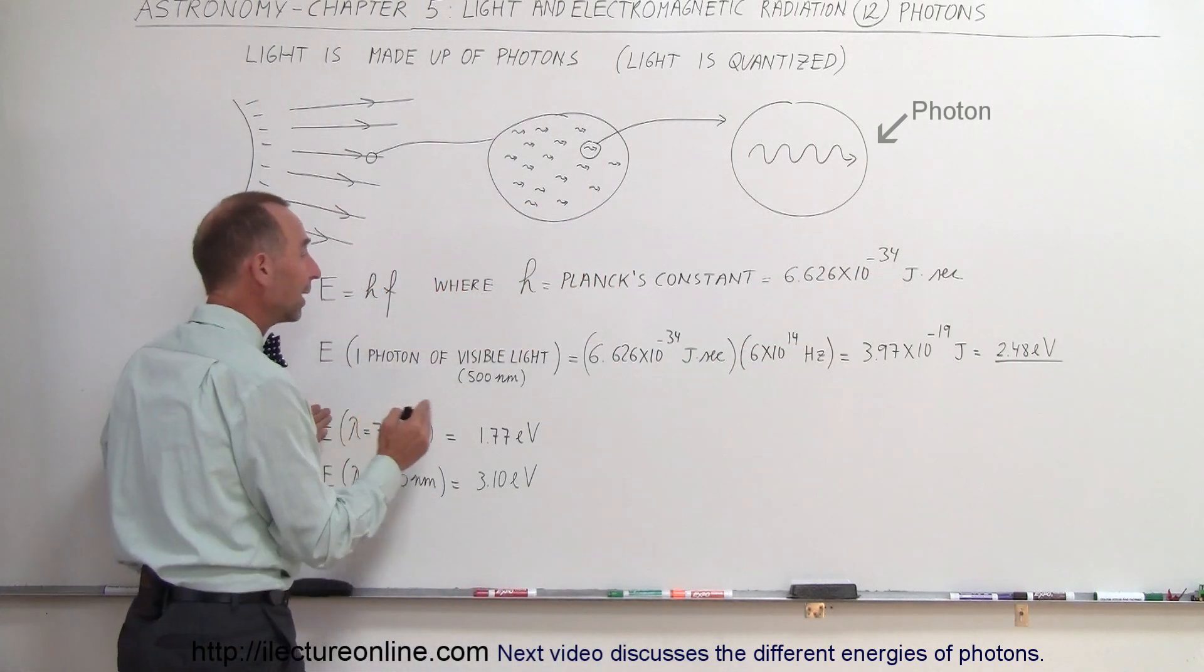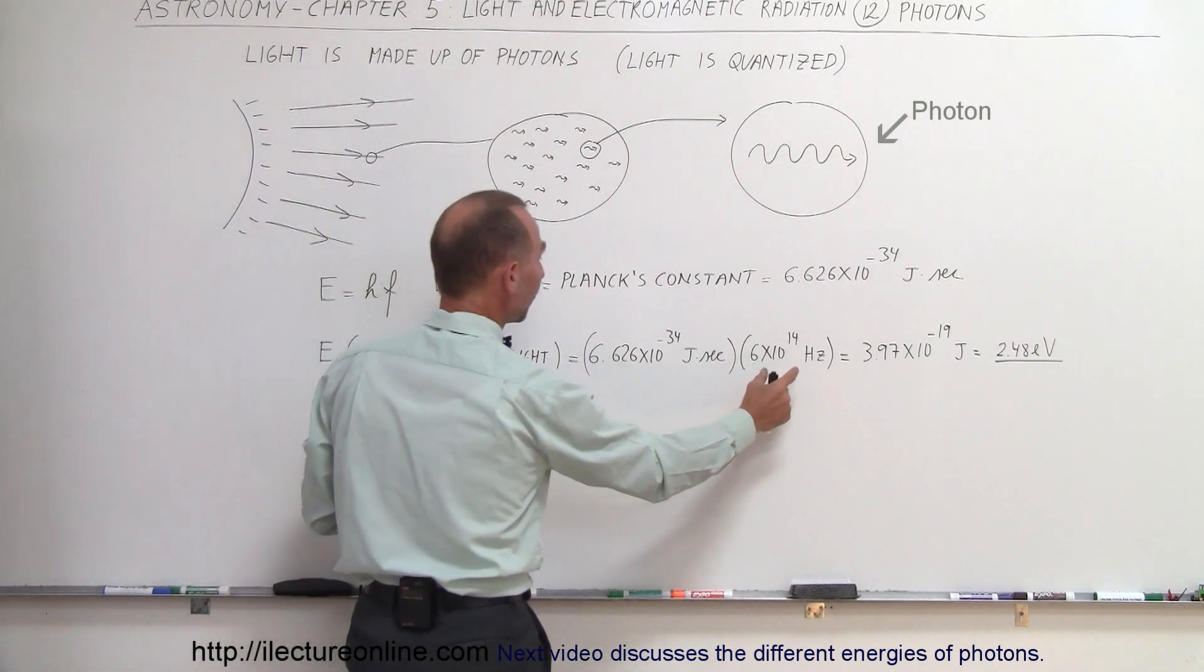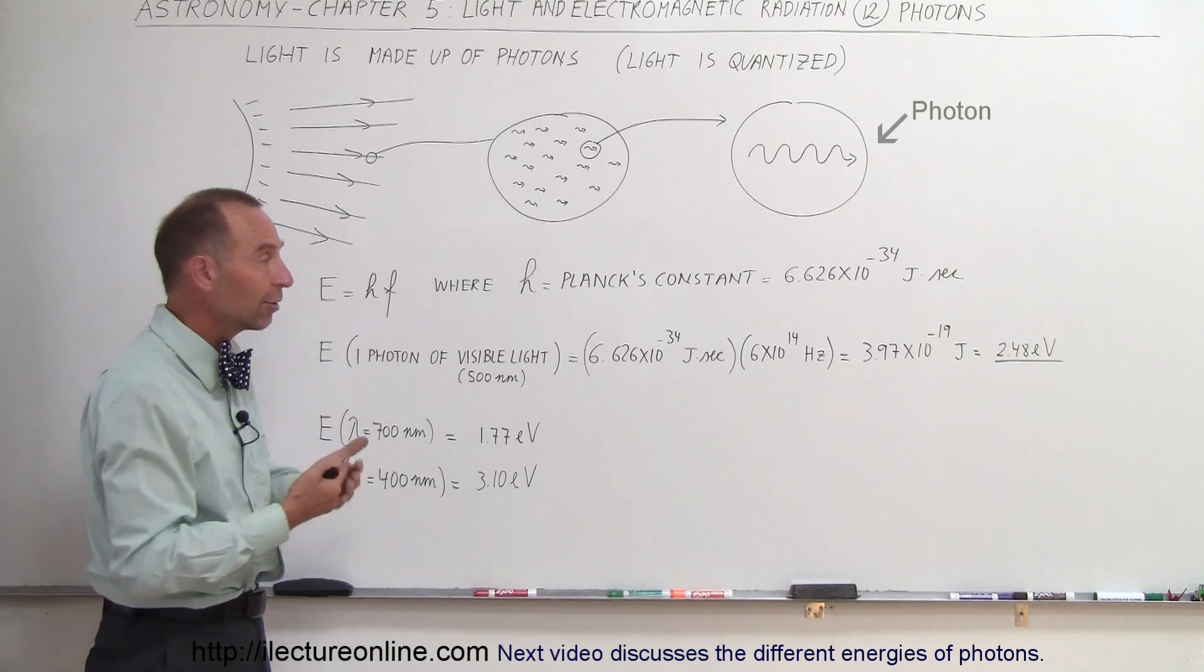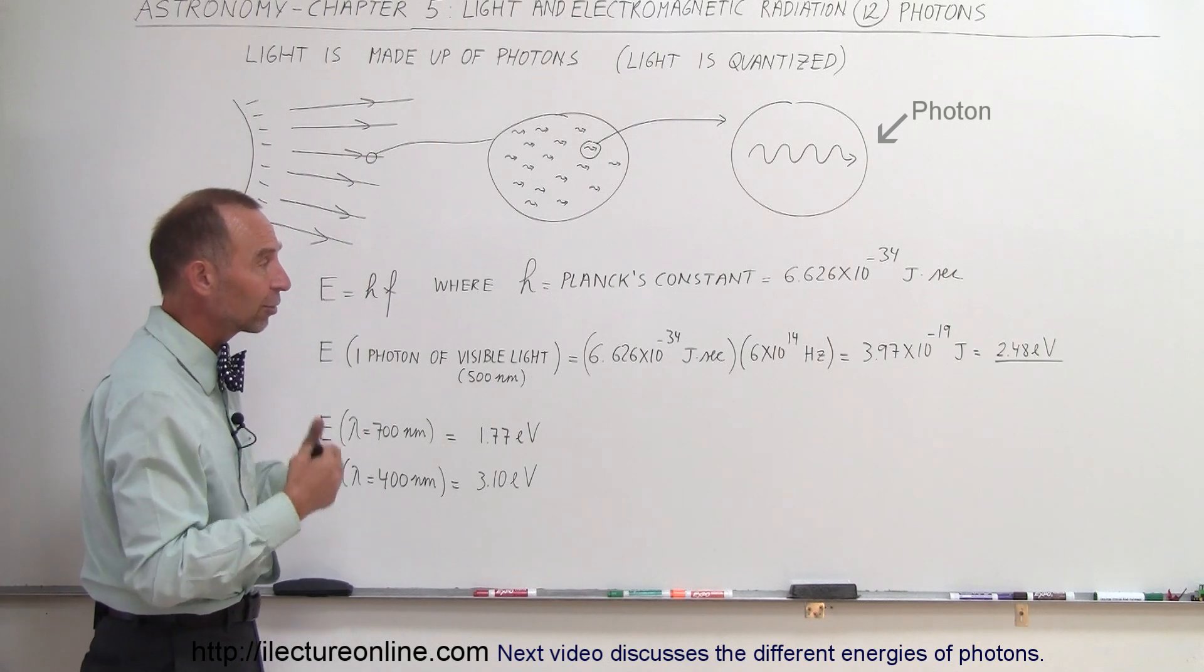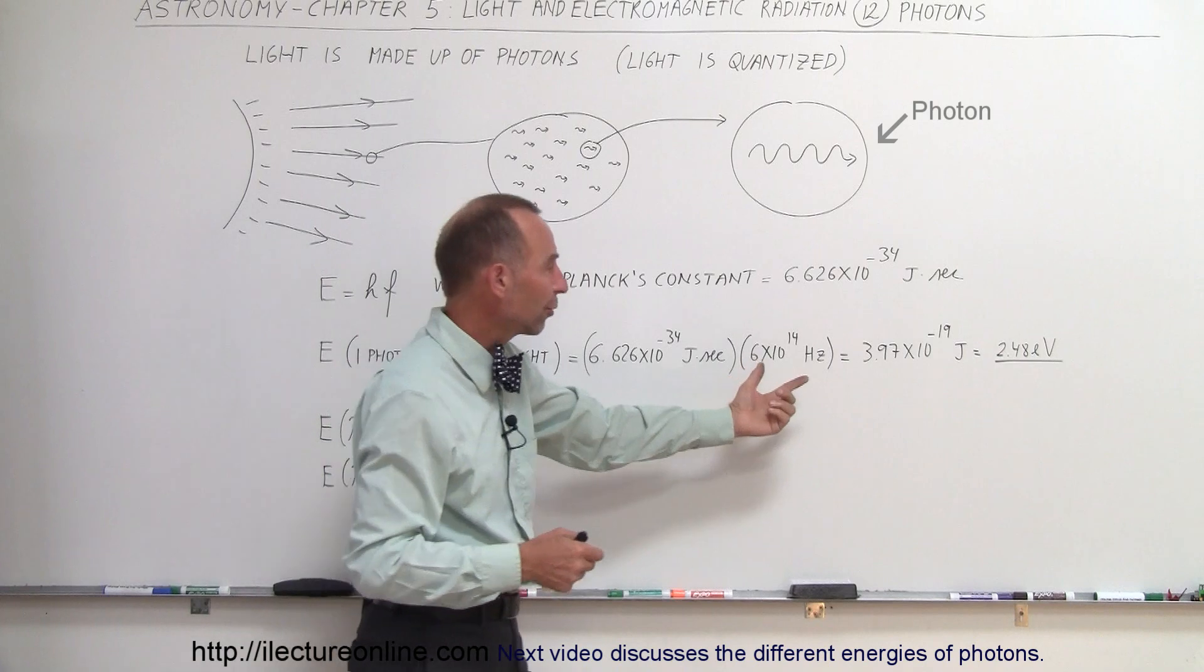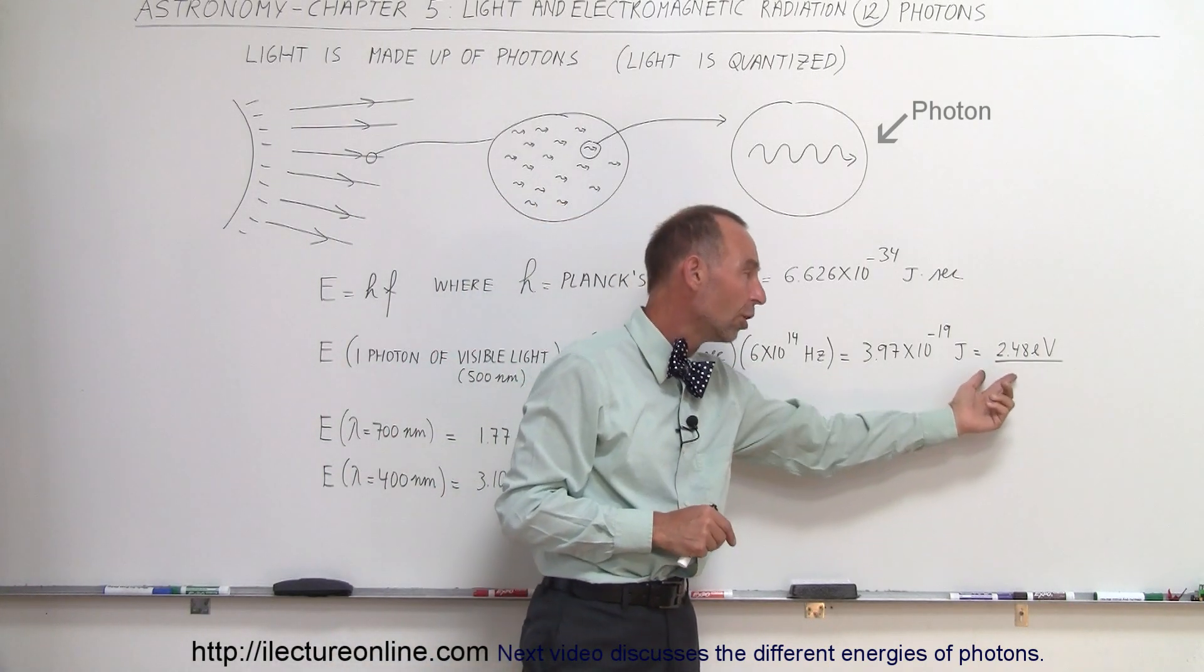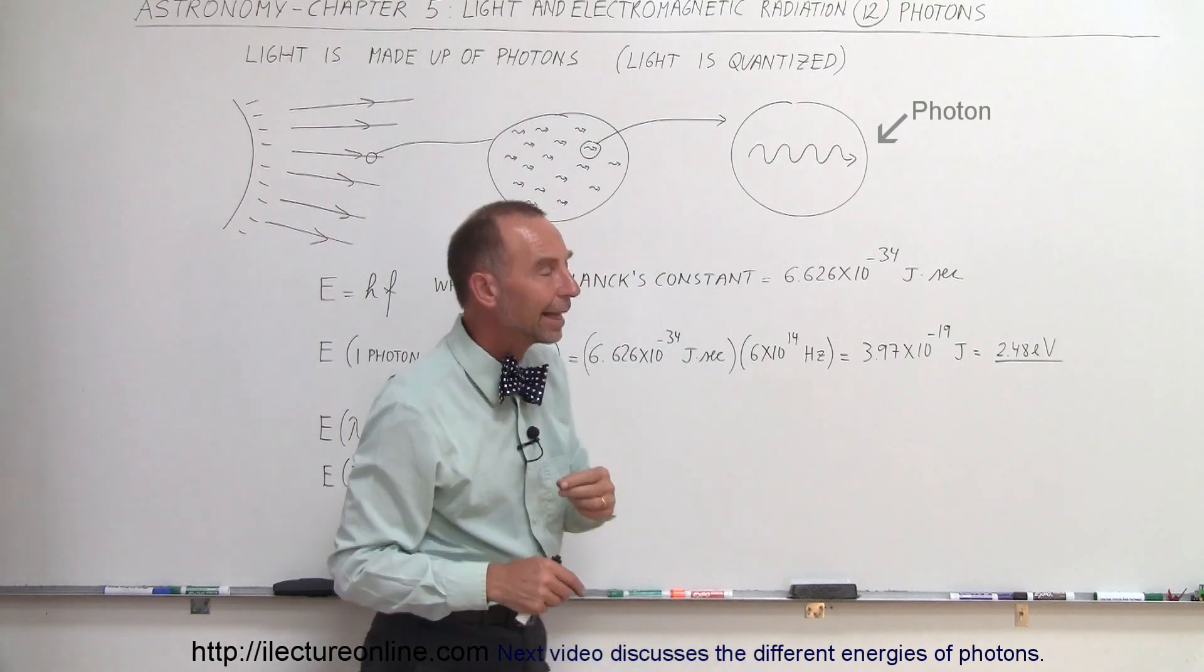Now if we multiply that times the frequency, let's say of visible light, the typical frequency of visible light is about 6 times 10 to the 14th hertz or cycles per second. We come up with an energy for a single photon of almost about 4 times 10 to the minus 19 joules, which is 2.48 electron volts.